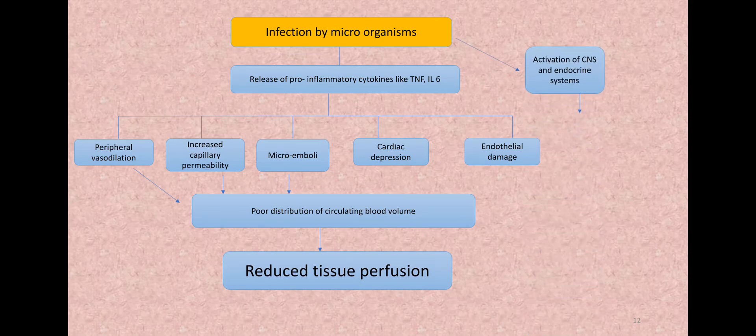Also the infection by the microorganism activates the CNS and other endocrine systems due to which there is selective vasoconstriction. Somewhere in the body vasoconstriction can occur, at other parts there is vasodilatation. So the whole blood flow is maldistributed. So there will be reduced tissue perfusion.